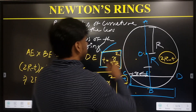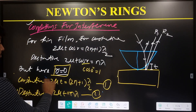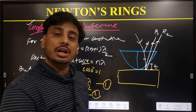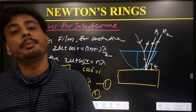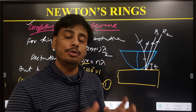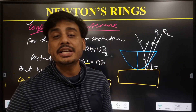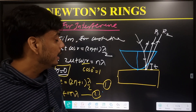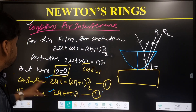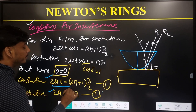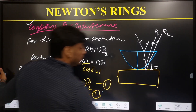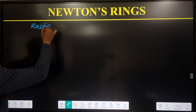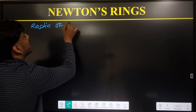From this formula we can calculate the thickness, and combined with the conditions for constructive and destructive interference, we can calculate the radius of constructive rings (bright rings, where light intensity is maximum) and the radius of destructive rings (dark rings, where light intensity is zero). Let's calculate the radius of bright rings.